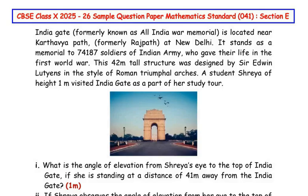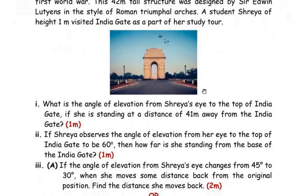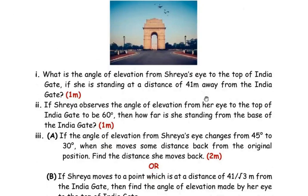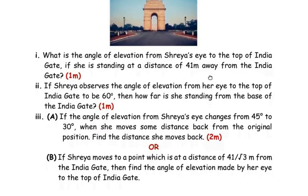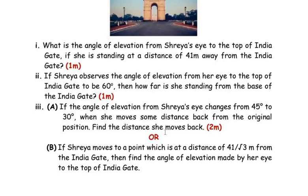Hello and welcome to my channel. In this video, we are going to solve a case study based question from class 10, 2025-26 sample question paper for mathematics standard with subject code 041. This question is from the 'Some Applications of Trigonometry' chapter and it has three sub-questions. The first and second sub-questions are for one mark, and the third sub-question is of two marks with an or question as well — you can attempt either the A question or the B one. Let us start with the first question now.